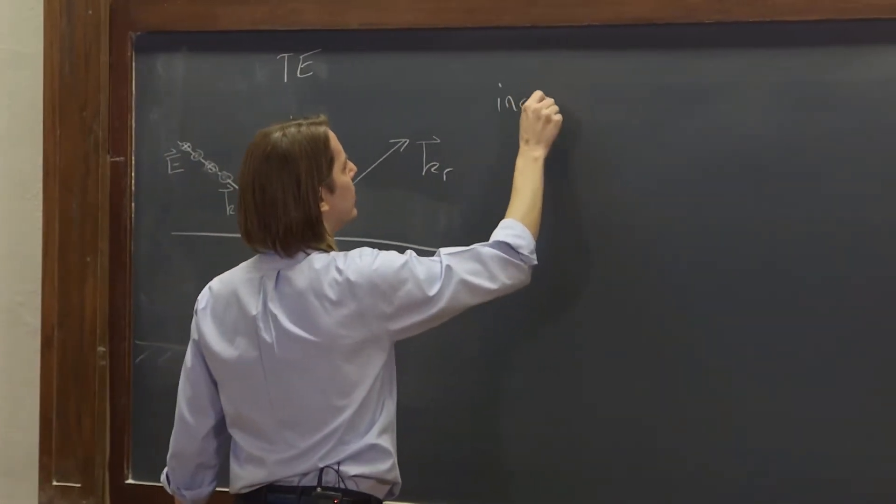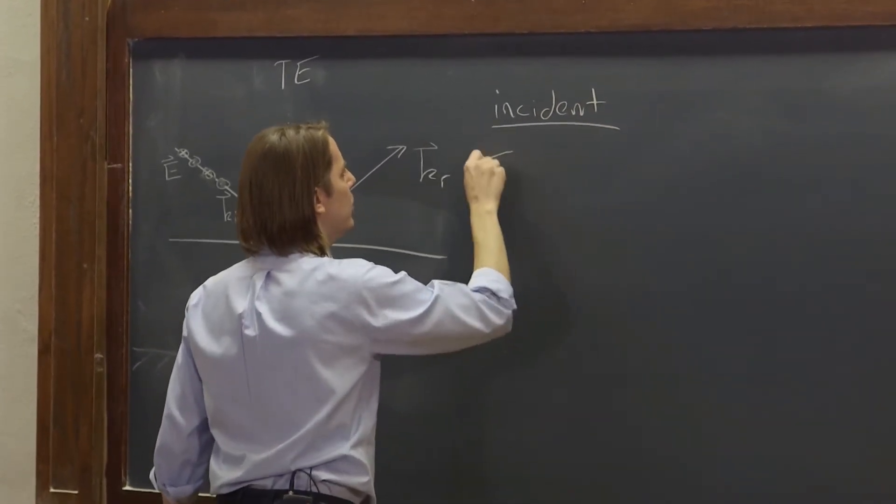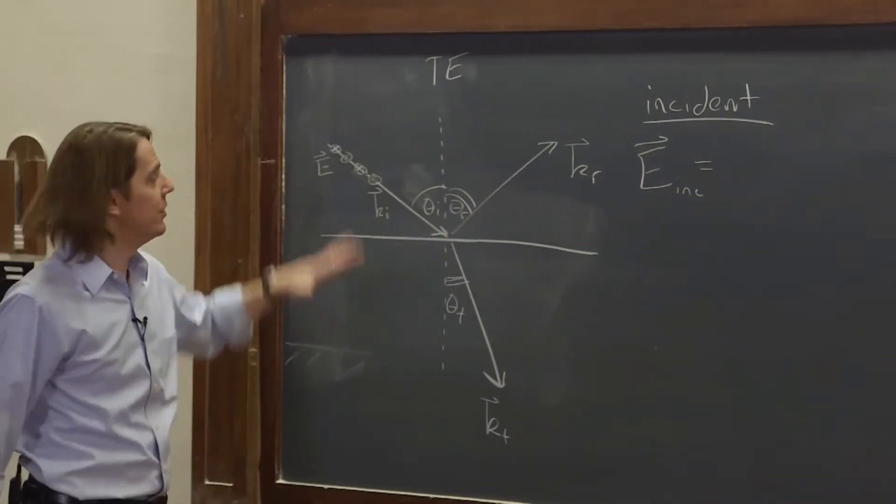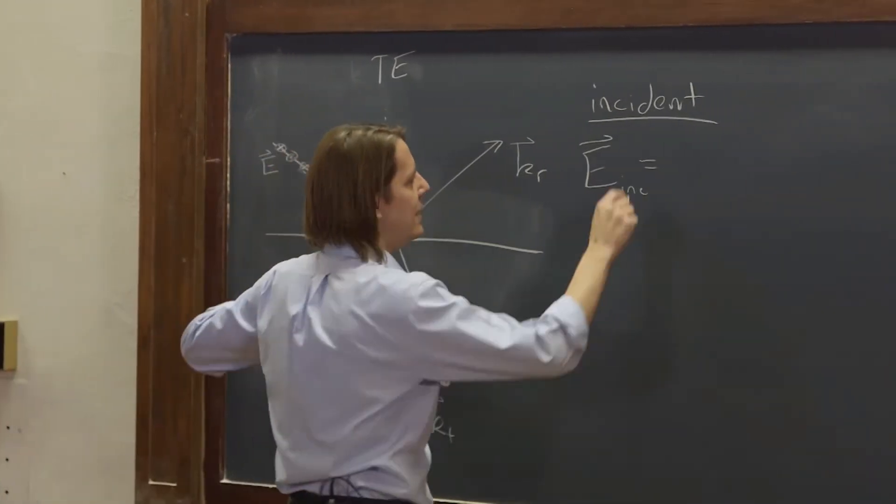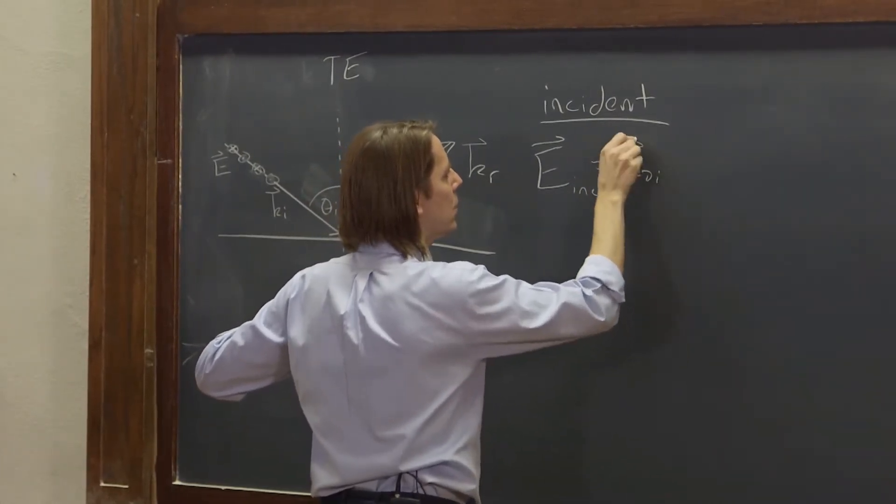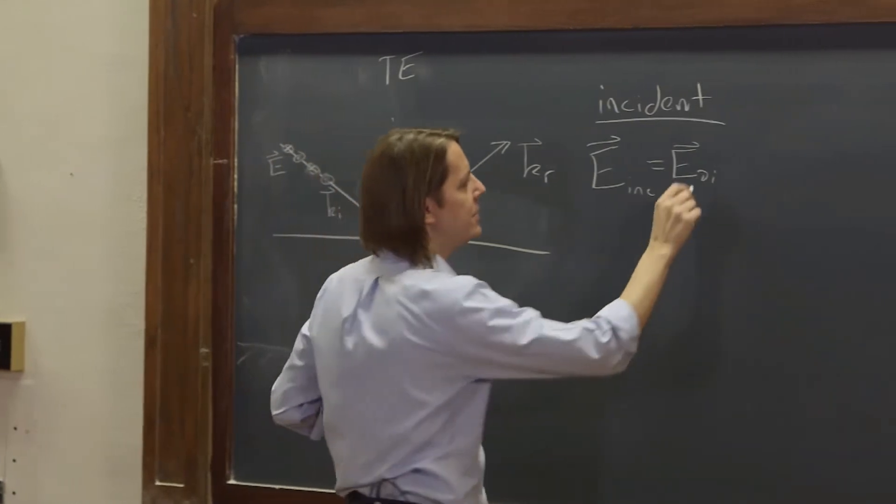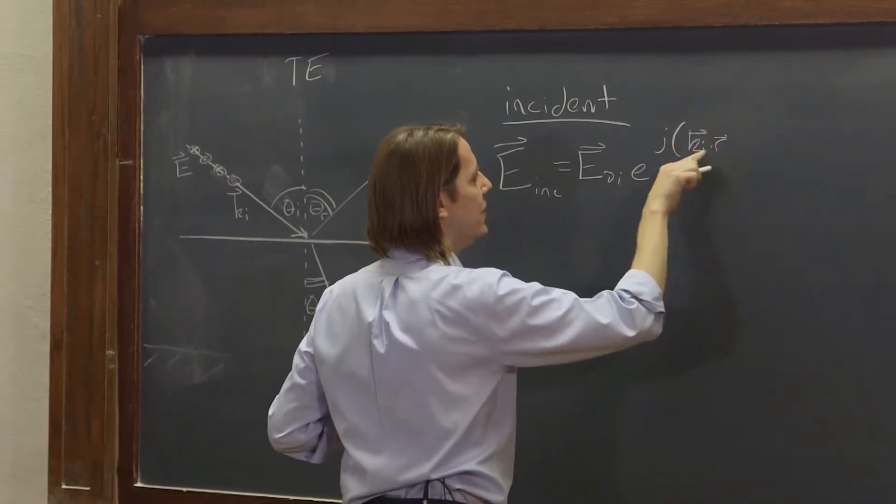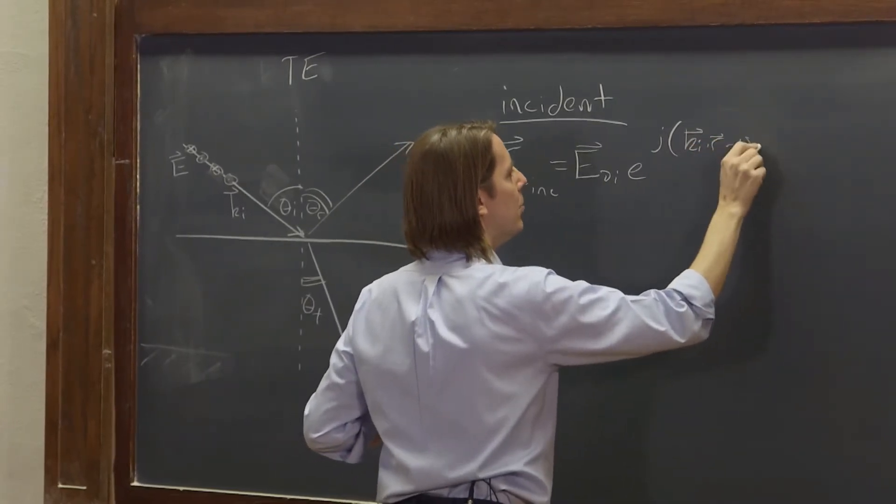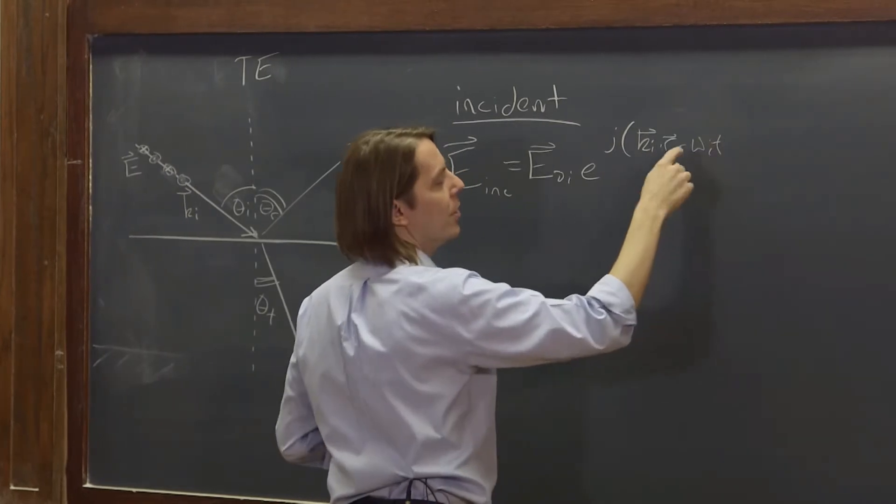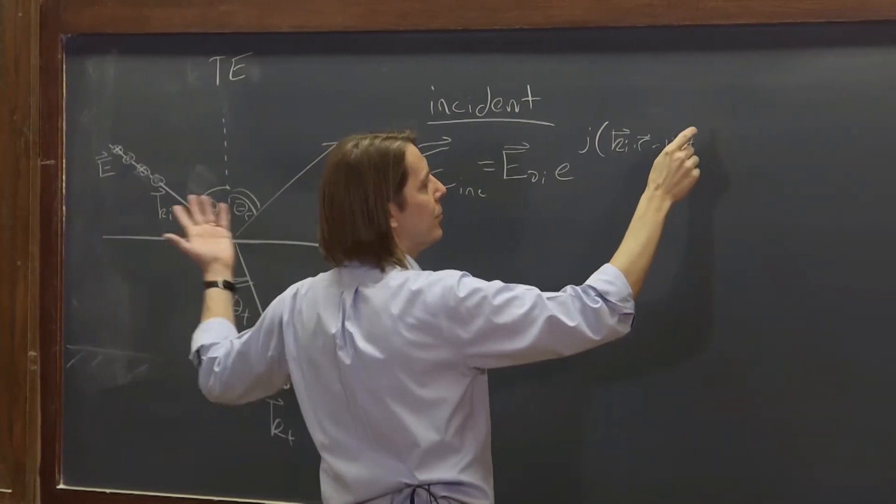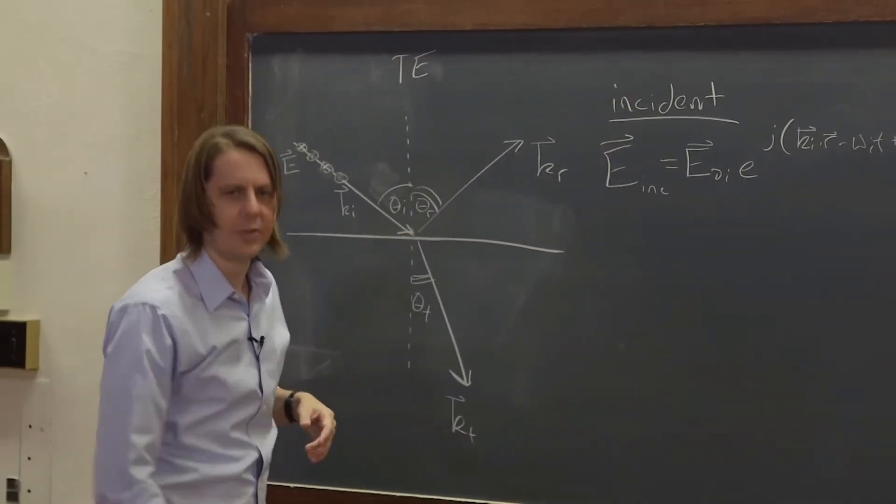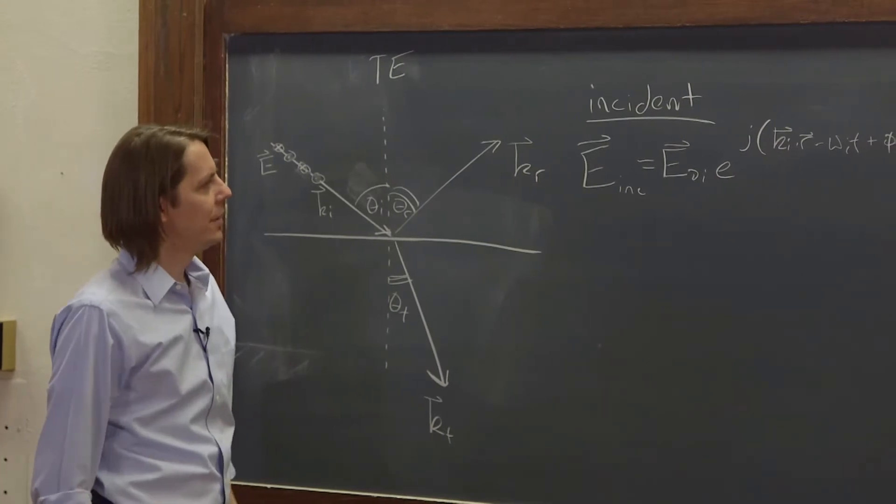And then we can, let's go ahead and write out then expressions for these things. So the incident plane wave. So E incident as a field, this incident plane wave. We would write it as E-not-I vector. That's the vector amplitude. E to the J, and then Ki dot R, the incident wave vector, minus omega-I-T, that's its angular frequency. It's at some frequency. And then plus, it might have a phase, phi-I. And I think, yeah, that's everything. I'm trying to get all the notation correct. Okay.